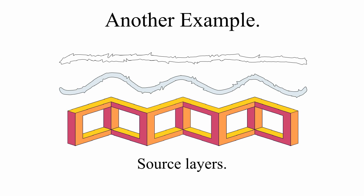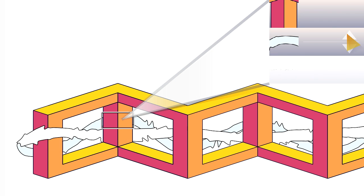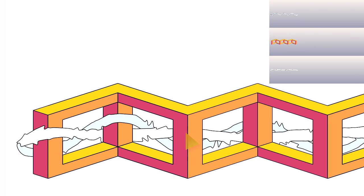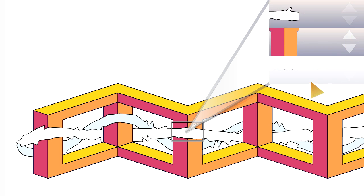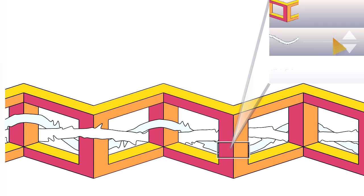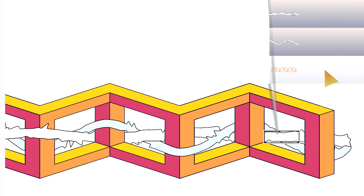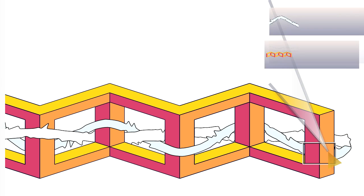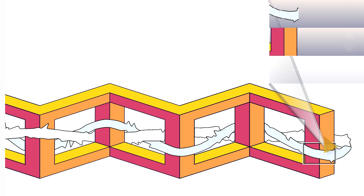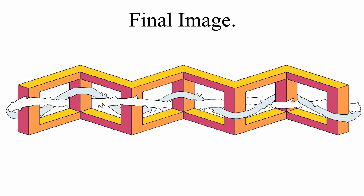Another example. The user selects regions of overlap and manipulates the stacking order in order to achieve a twining effect. The final image.